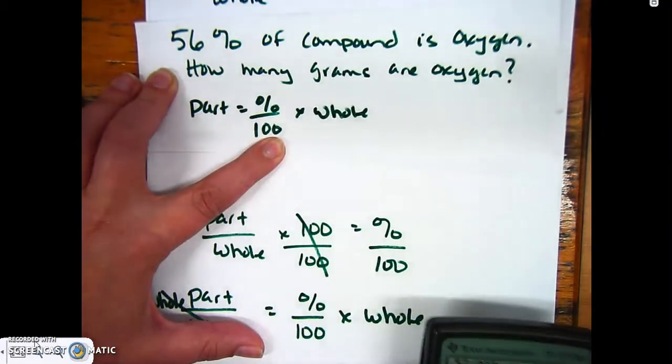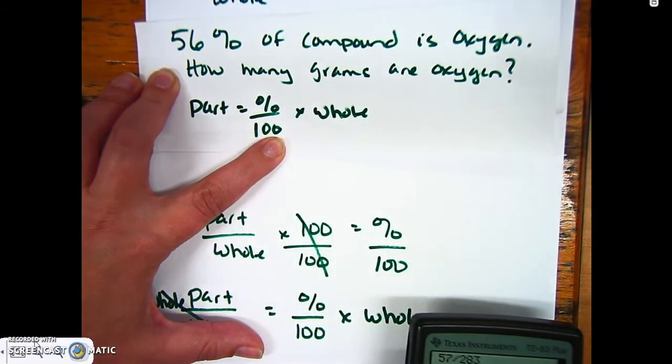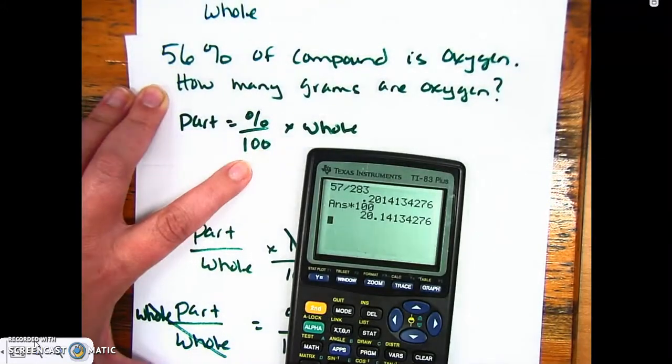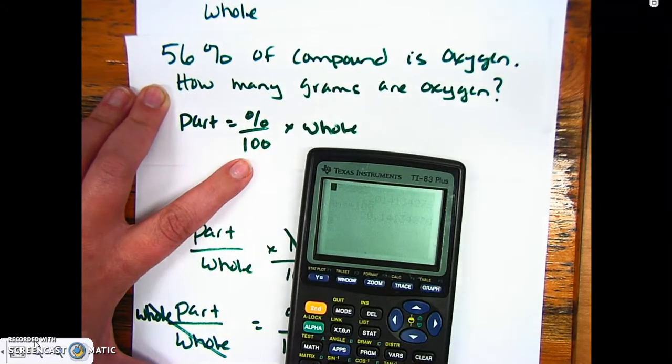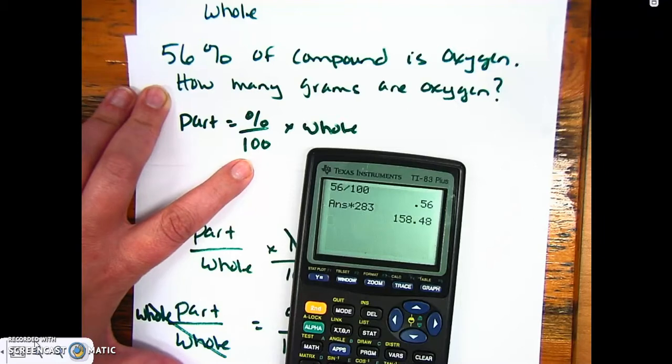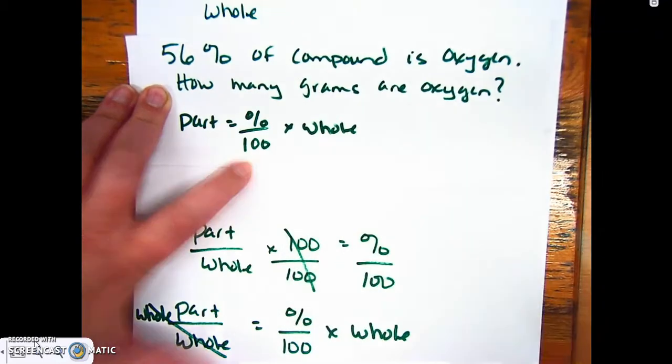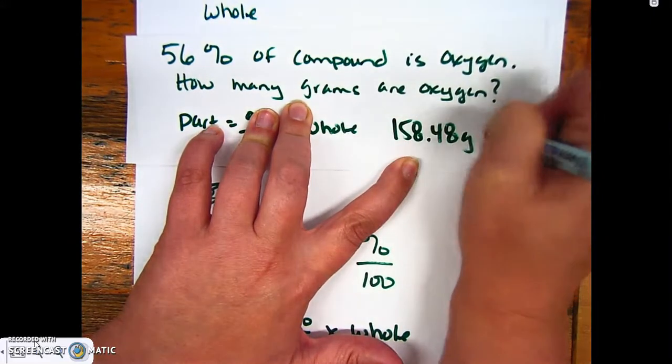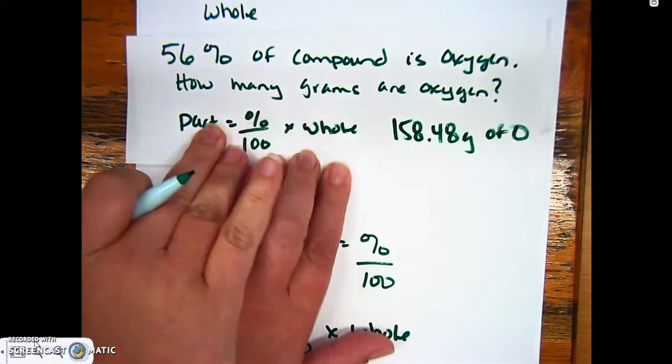So I'd have to take 56% over 100 and multiply by the whole, which was 283. I'm going to take 56 divided by 100, which gives 0.56, and then multiply by my whole, 283 grams. And so I get 158.48 grams of oxygen.